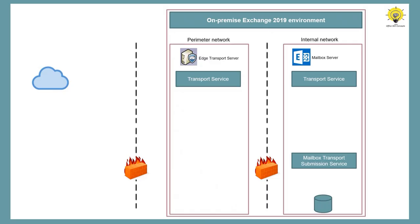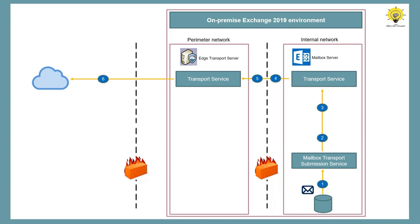If on-premise users send an email to the internet, the mailbox transport submission service picks the email from the mailbox database. Then using SMTP, the mailbox transport submission service sends that email to the transport service running on the mailbox server. In the transport service, a default connector named after the mailbox server receives that email. Then this email is sent to the Edge Transport Server using the intra-organization send connector, which automatically sends emails between Exchange servers in the same organization. In the transport service on the Edge Transport Server, the default receive connector — named default internal receive connector — accepts that email. Then this email is sent to the internet using the EdgeSync to internet connector that runs on the transport service of the Edge Transport Server.